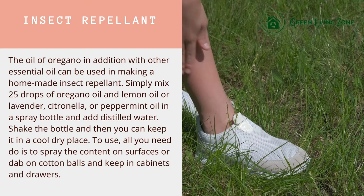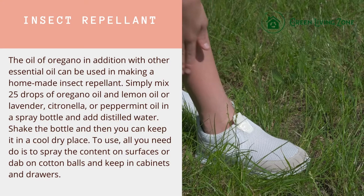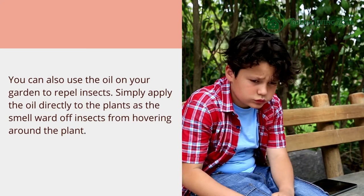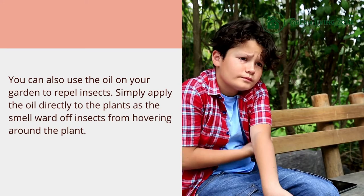To use the insect repellent, spray the content on surfaces or dab on cotton balls and keep in cabinets and drawers. You can also use the oil in your garden to repel insects — simply apply the oil directly to the plants, as the smell wards off insects from hovering around.